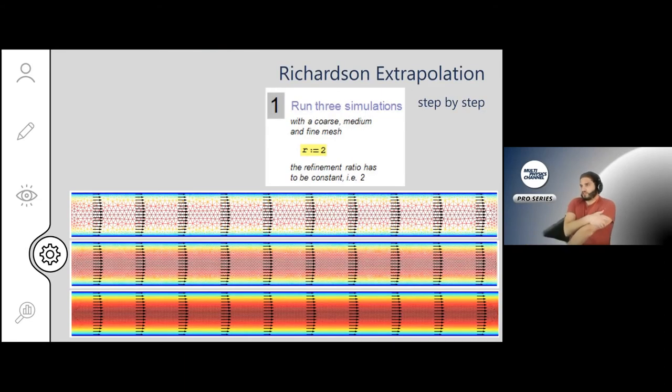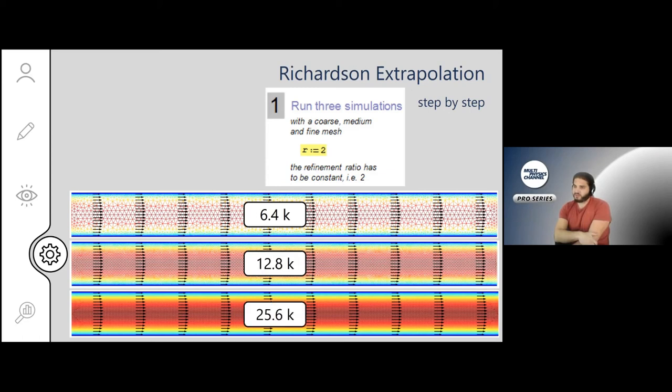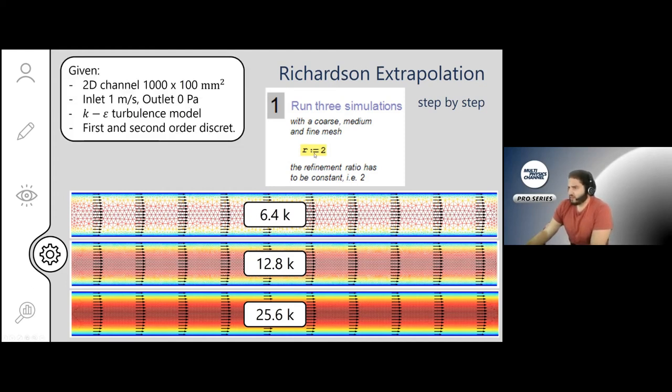I want to go with you through this Richardson extrapolation step by step. So the first thing you need to do is to run three simulations, and here you do that with three meshes: you have a coarse mesh, you have a medium mesh, and you have a fine mesh. You have to make sure that the refinement ratio always stays constant. So we jump here from 6.4k to 12.8k and then double again. That can be even a refinement ratio, as long as it's constant.